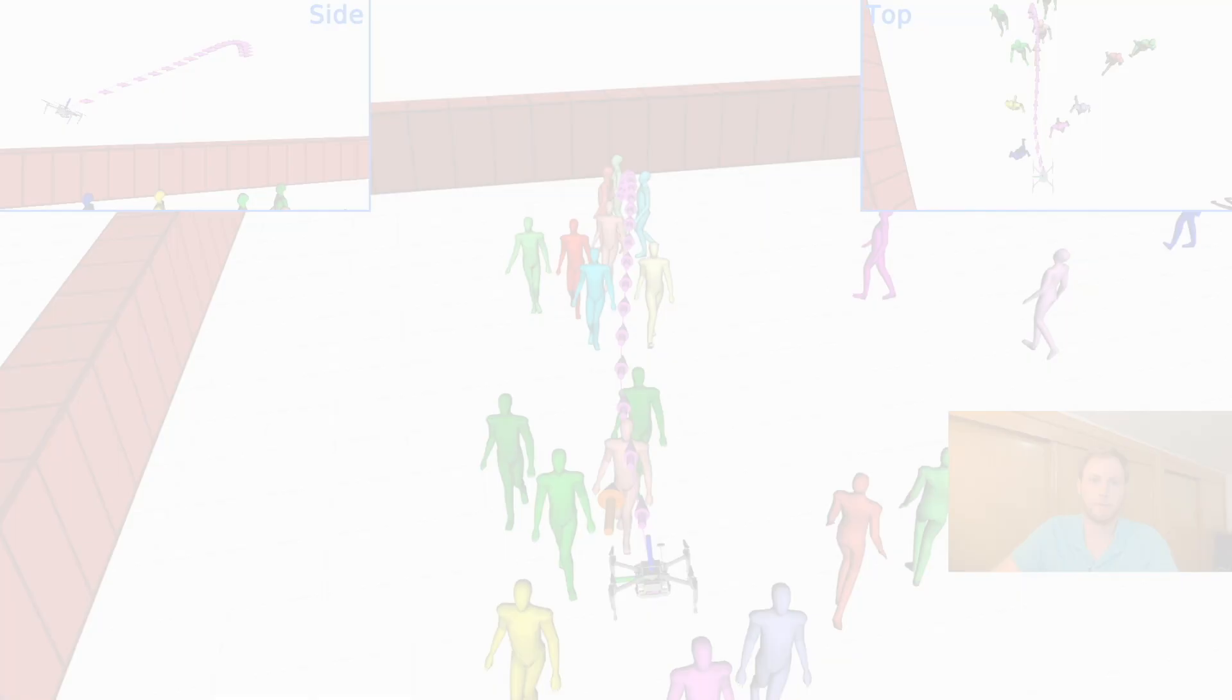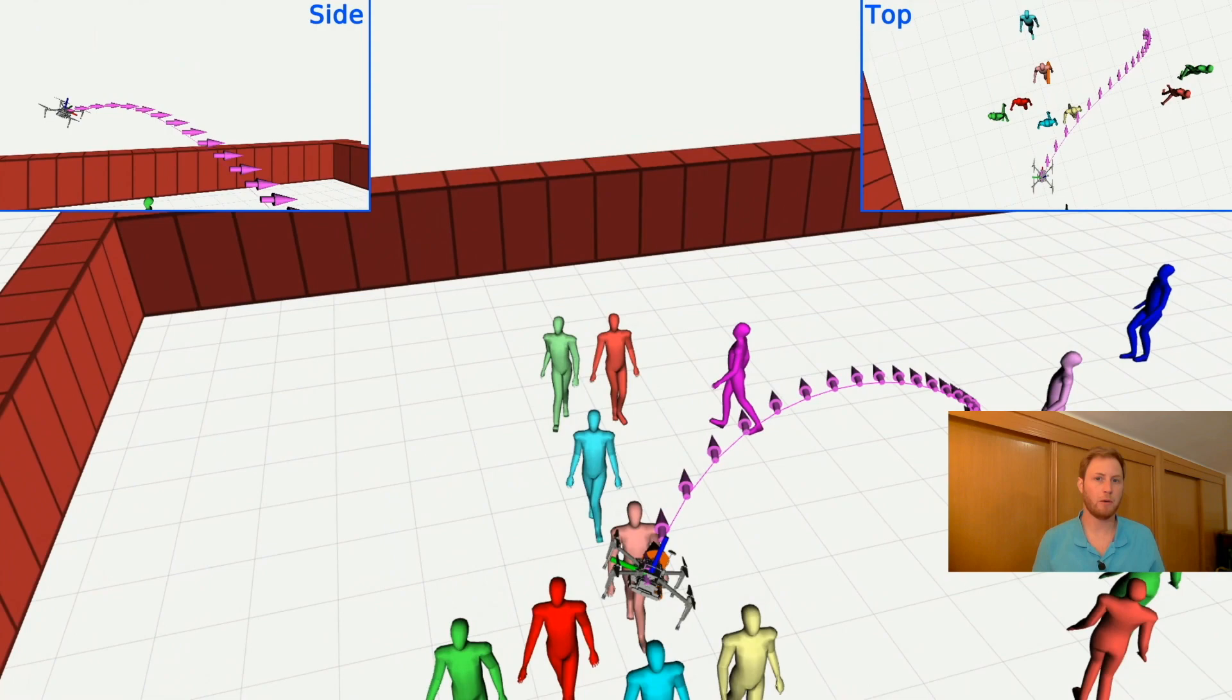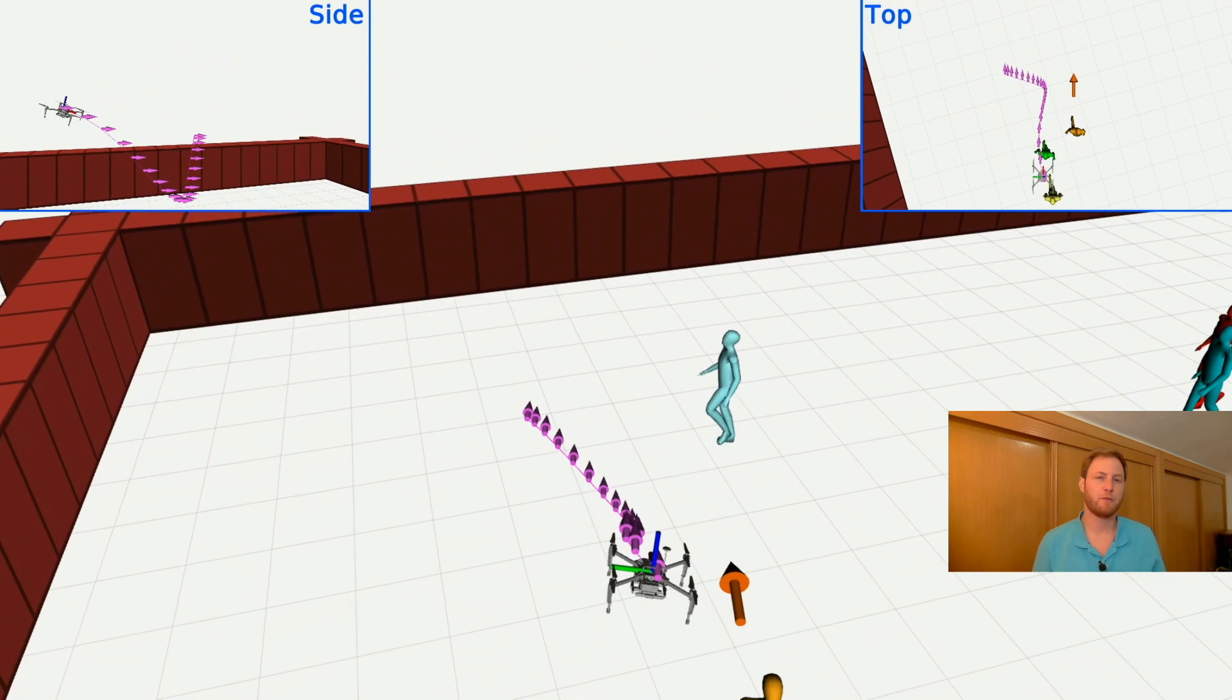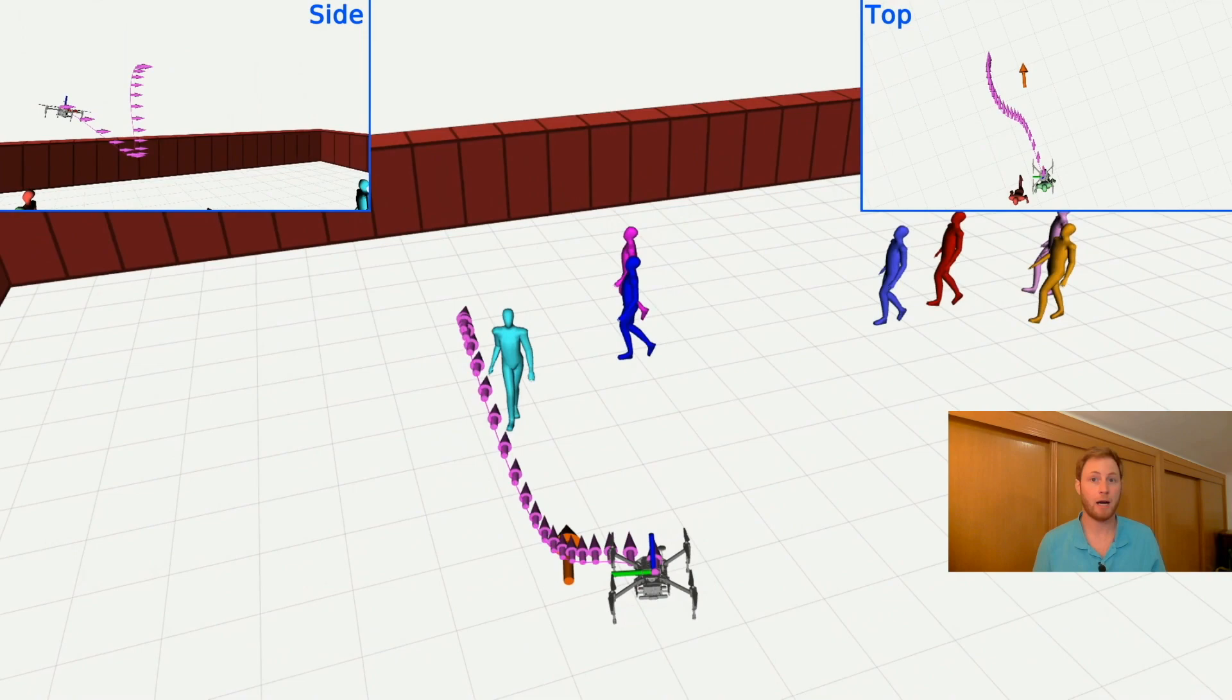In the third experiment, we challenge our algorithm to scale well on a more complex environment. We employ the Pedsim package, which is based on Helbing's social force model to simulate 40 pedestrians in an open environment. They follow a predefined square path with bifurcations, setting the robot to fly against the crowd at 1.5 meters per second.